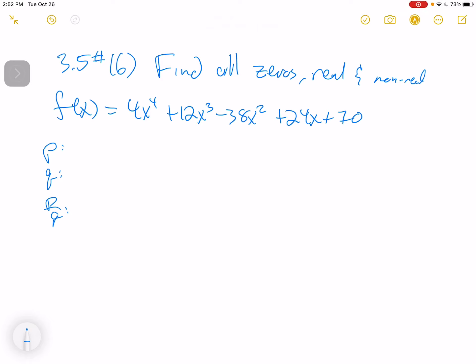This is 3.5 at number 16, so let's find all zeros, real and non-real, of this function. We have f of x equals 4x to the 4th plus 12x cubed minus 38x squared plus 24x plus 70.